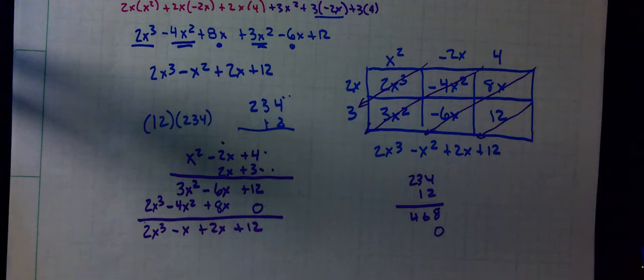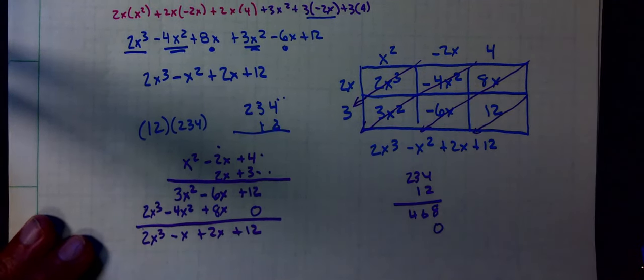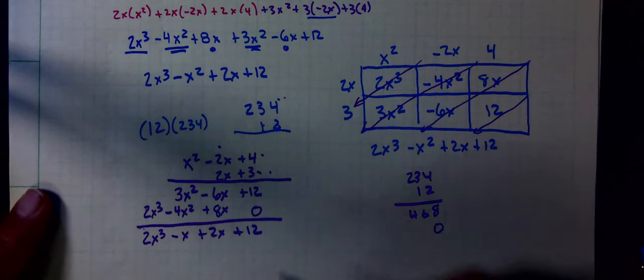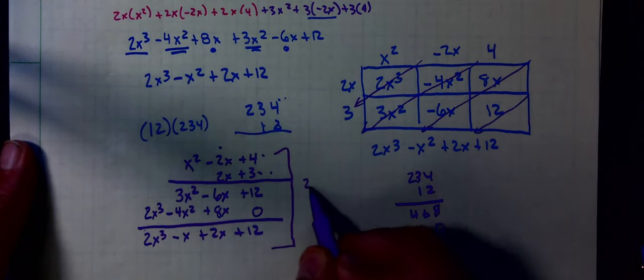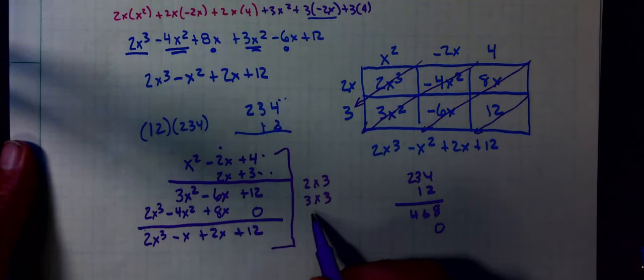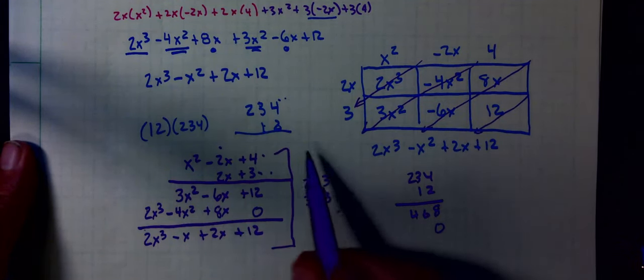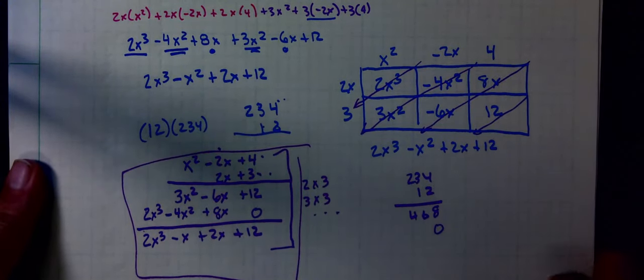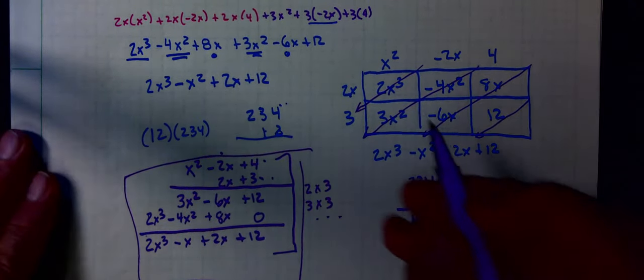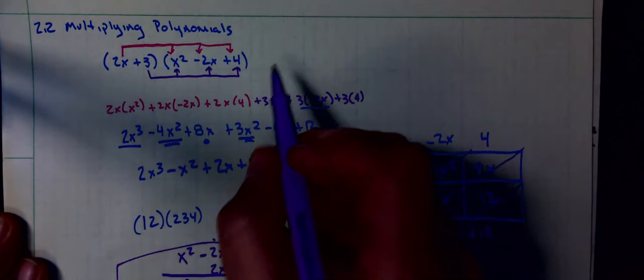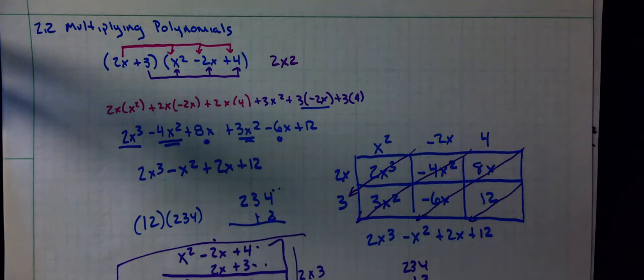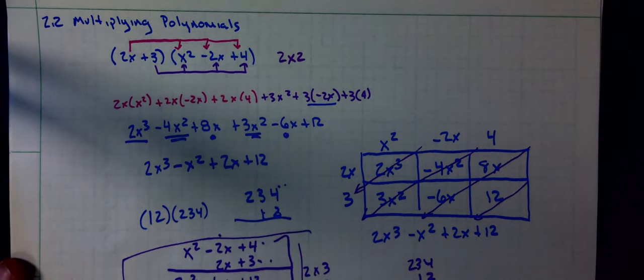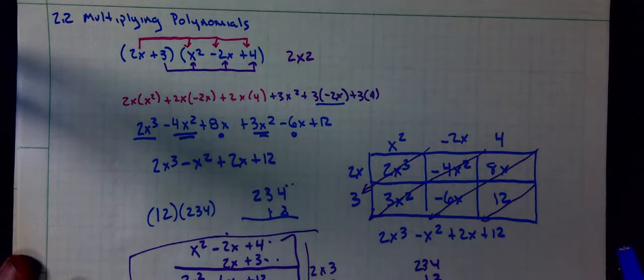Those are the three methods that you have to multiply polynomials. The method that I use is anytime it's more than a 2x2, like a 2x3 or 3x3, anything more than a 2x2 I use the box method. If it is a 2x2, I typically use distribution.